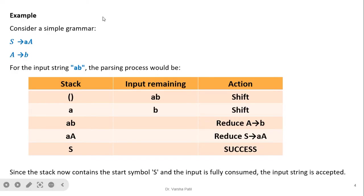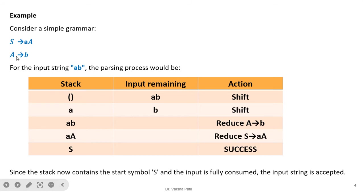We will first look at a simple example, then an example related to NLP. Two production rules are given: S → a A, and A → b. We need to parse the input string 'ab' and determine whether it is accepted by the shift-reduce parser.